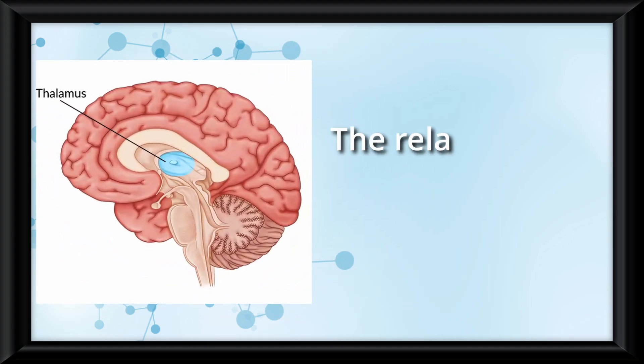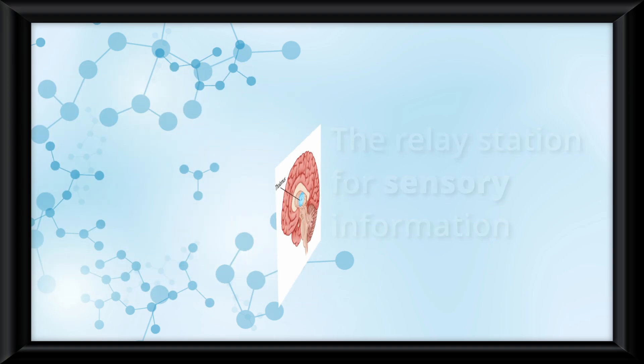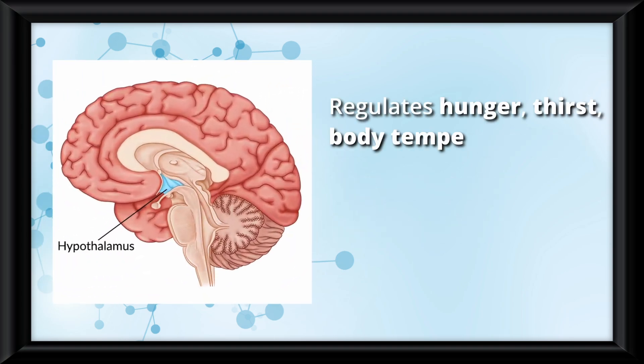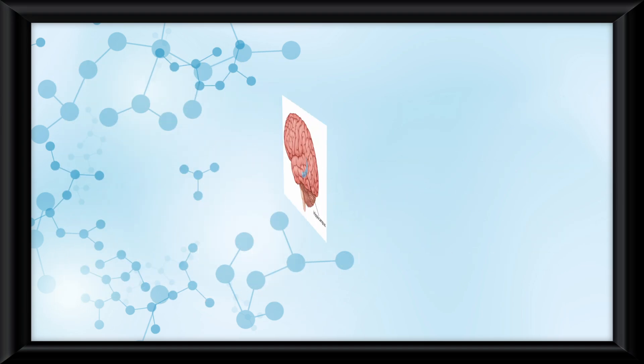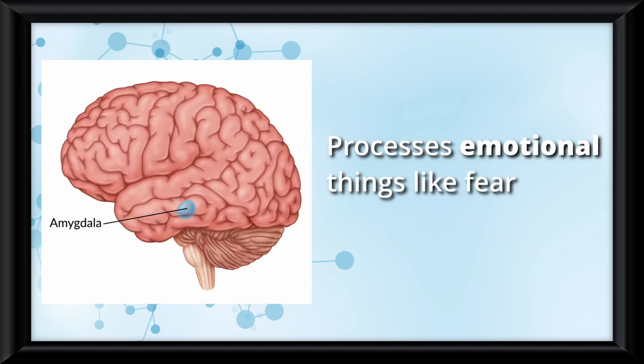which includes the thalamus, which is the relay station for sensory information, the hypothalamus which regulates hunger, thirst, body temperature, sexual behavior, and communicates with the pituitary gland to release hormones, the hippocampus which forms new memories, and the amygdala which processes emotional things like fear and aggression.